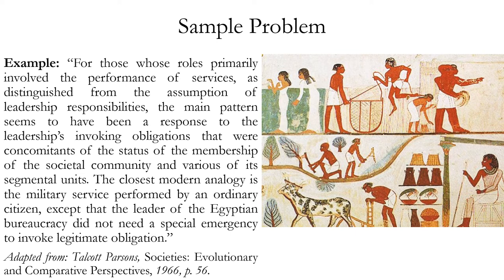Let's take the Parsons passage one sentence at a time. The first sentence is about those whose roles primarily involve the performance of services, distinguished from those who have leadership responsibilities. It talks about the main pattern being a response to leadership's invoking obligations. So what is this sentence really saying? What is it really getting at? How can we break down the basic idea more simply?